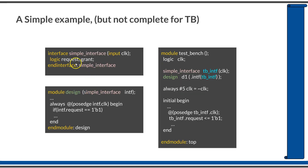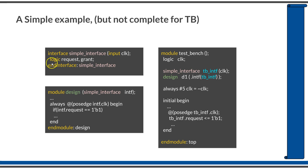We will go straight to an example of writing an interface and using it in the testbench and design code. Note that this is not the final code for using an interface in a testbench — we need to make some additions to the interface and testbench code, which we will see in coming sessions. This is just a starting point. The first block defines an interface named 'simple_interface', which has a clocking signal as input and two logic members: request and grant. Note that no directions are specified here — it is not input or output, just a logic signal.